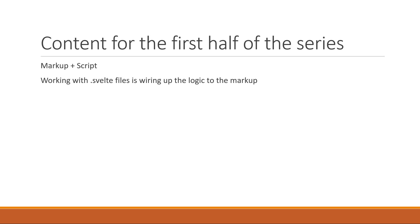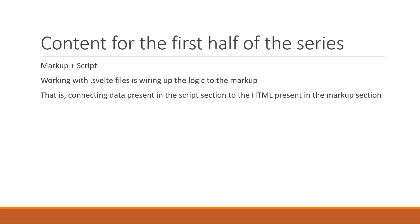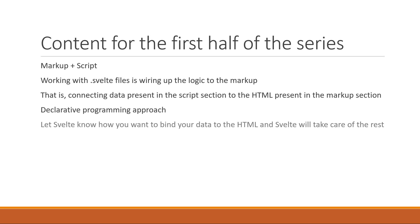A major portion of working with a .svelte file is wiring up the data and logic to the markup — that is, connecting the data present in the script section to the HTML present in the markup section. This is the declarative programming approach mentioned in the very first video. All you have to do is let Svelte know how you want to bind your data to the HTML, and Svelte will take care of the rest. This is what we will learn for the first half of this series, so let's finally get started with some code in the next video.